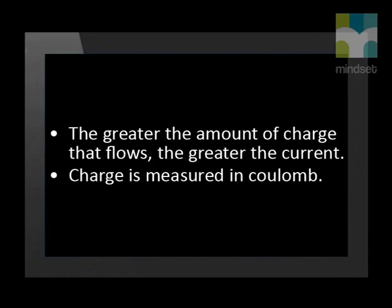What we have learned from our investigation is that the greater the amount of electrical charge that flows through the circuit every second, the greater the electric current. The greater the amount of charge that flows per second, the greater the current. We use a unit of measurement called the coulomb to measure charge. When a large current passes through a light bulb, there are more coulombs of charge passing through that light bulb in one second.